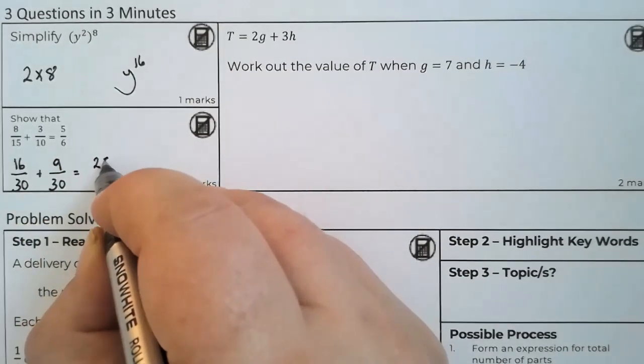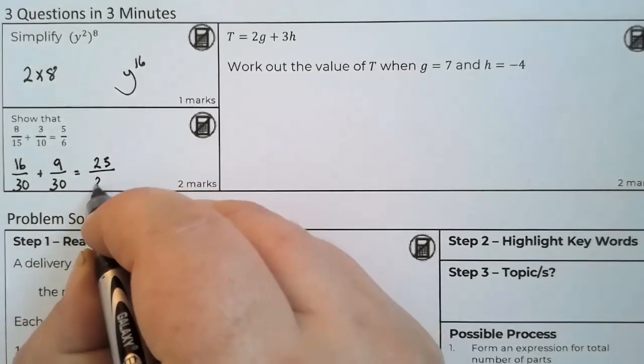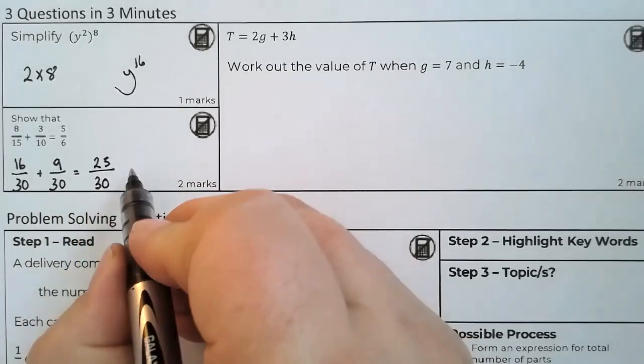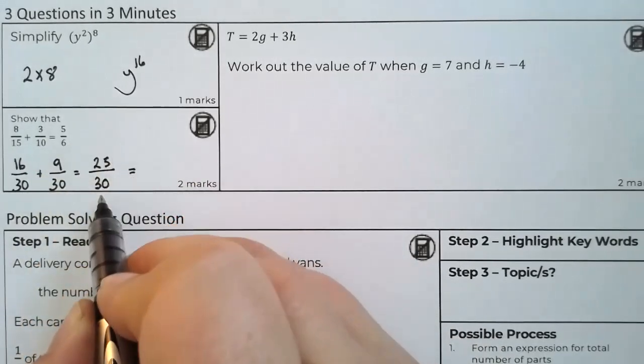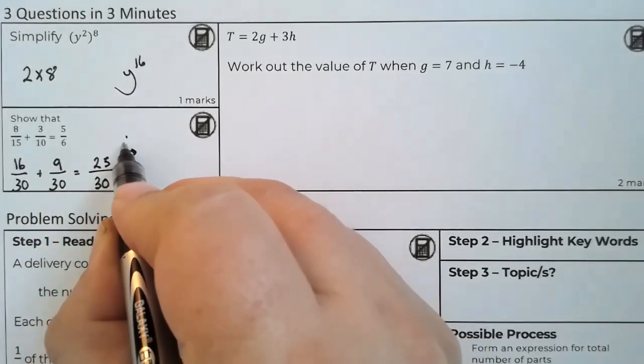Add these two together, and then we simplify. Now we look at this to see what we're doing. We can divide both by 5.